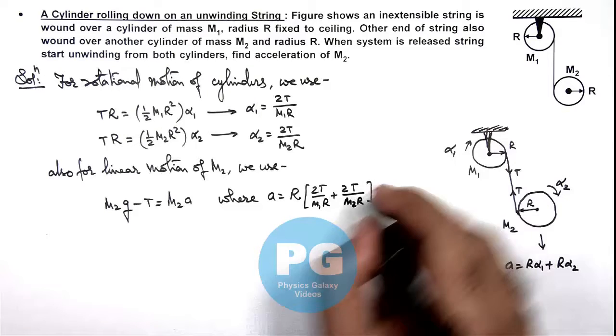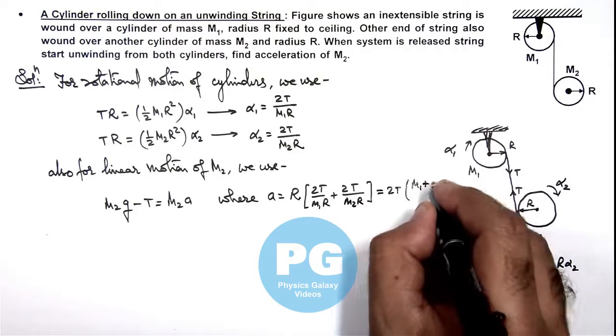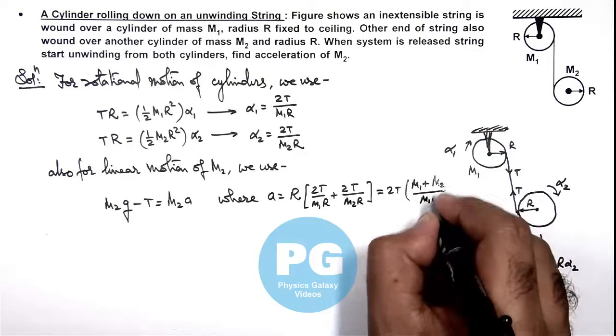This gives us the value 2T multiplied by m1 plus m2 divided by m1 m2.